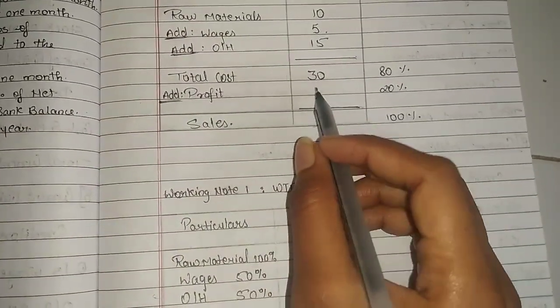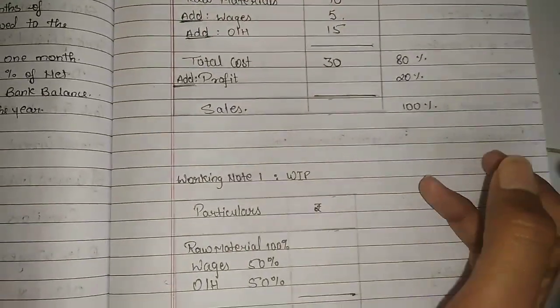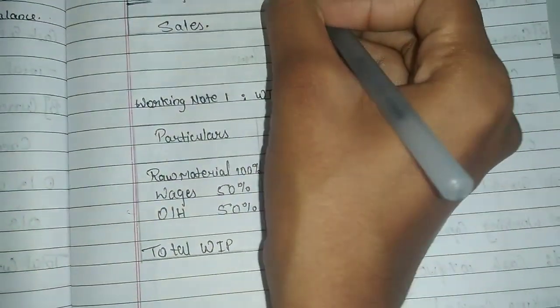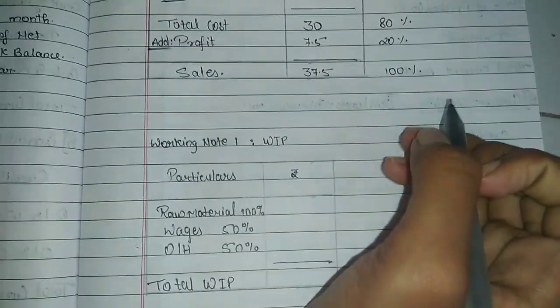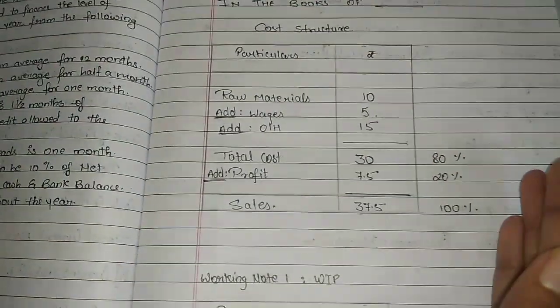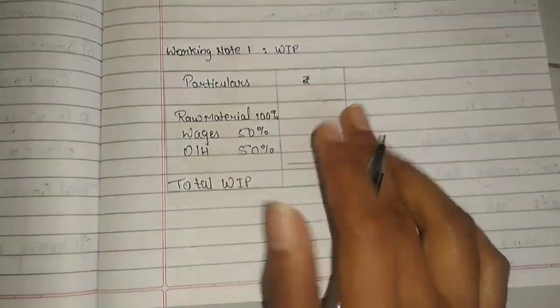So you can cross multiply. If 80% gives 20%, how much is it? So 20% overheads gives 7.5%, and sales is 37.5%. Now our cost structure can be completed. All this is working capital WIP calculation.